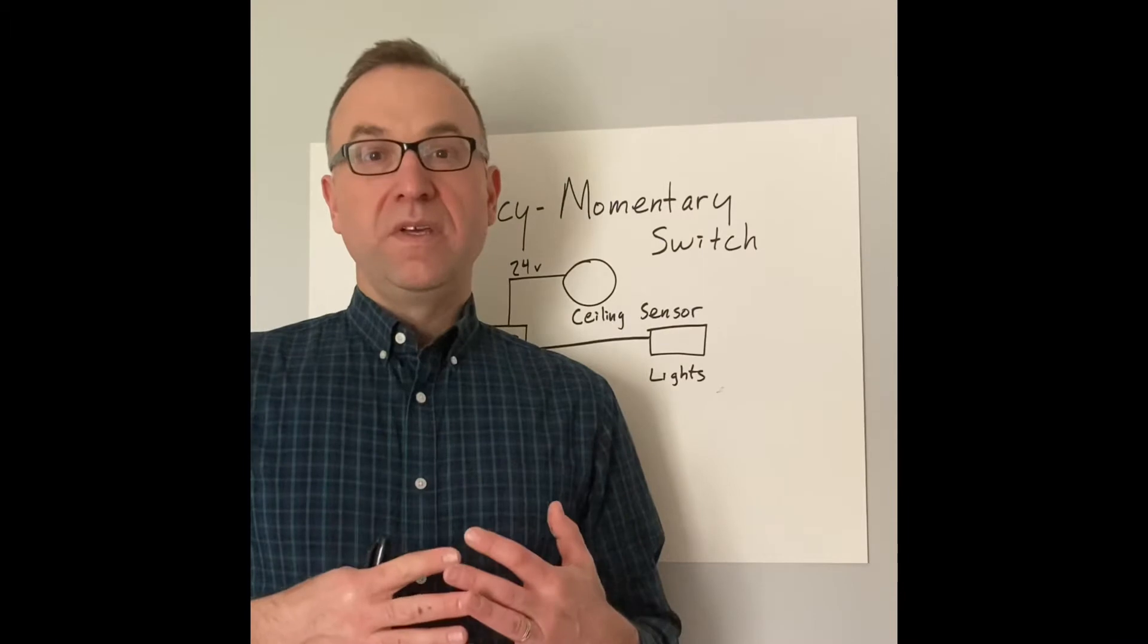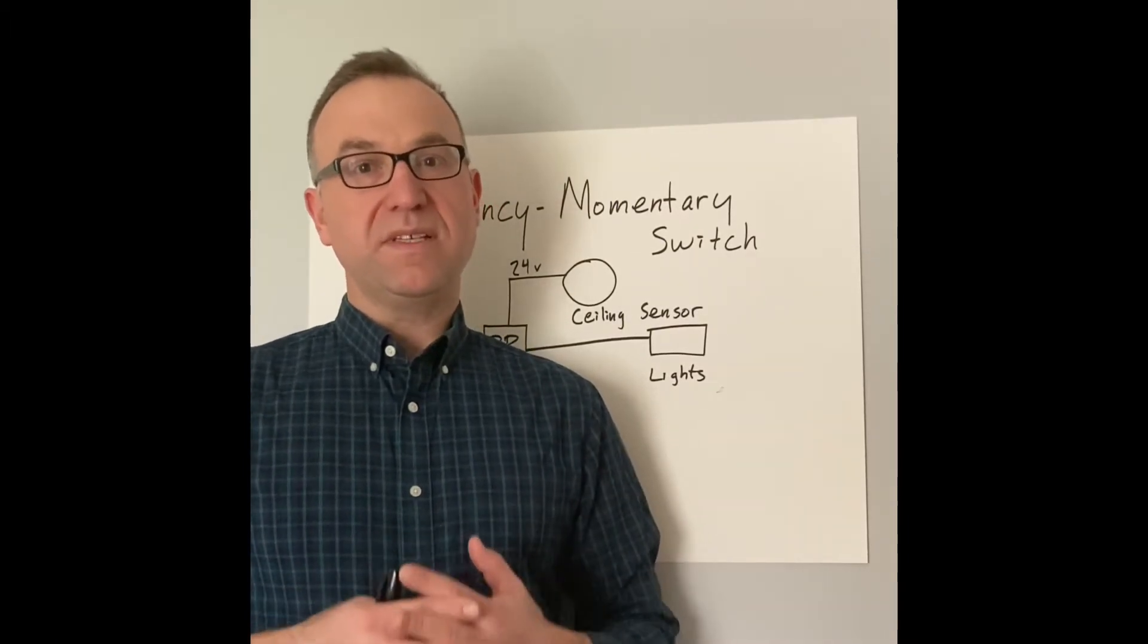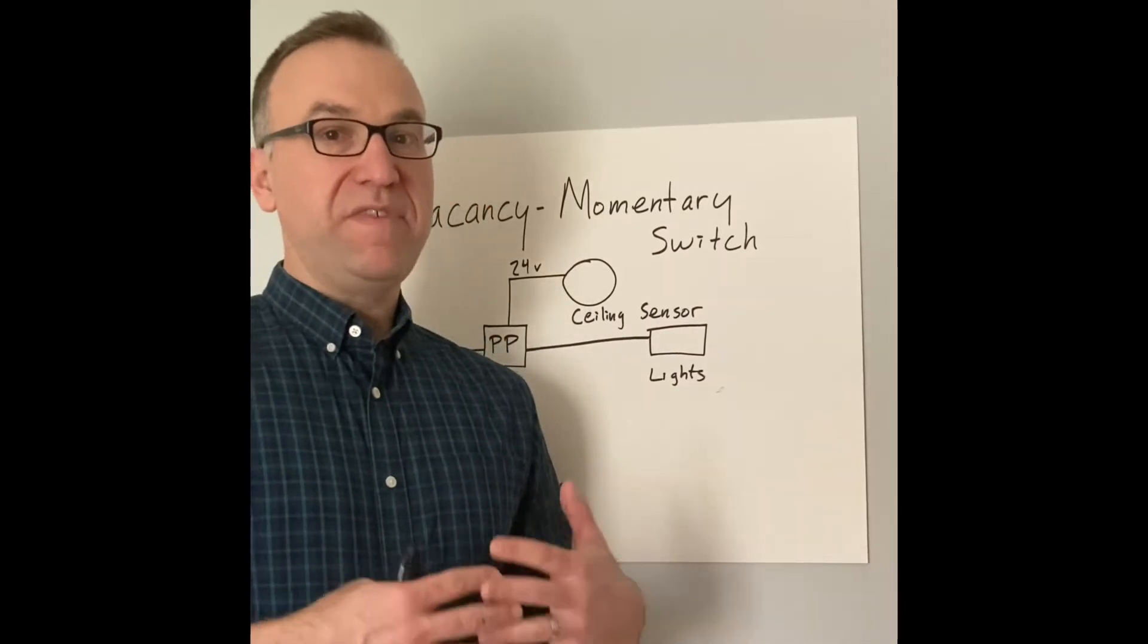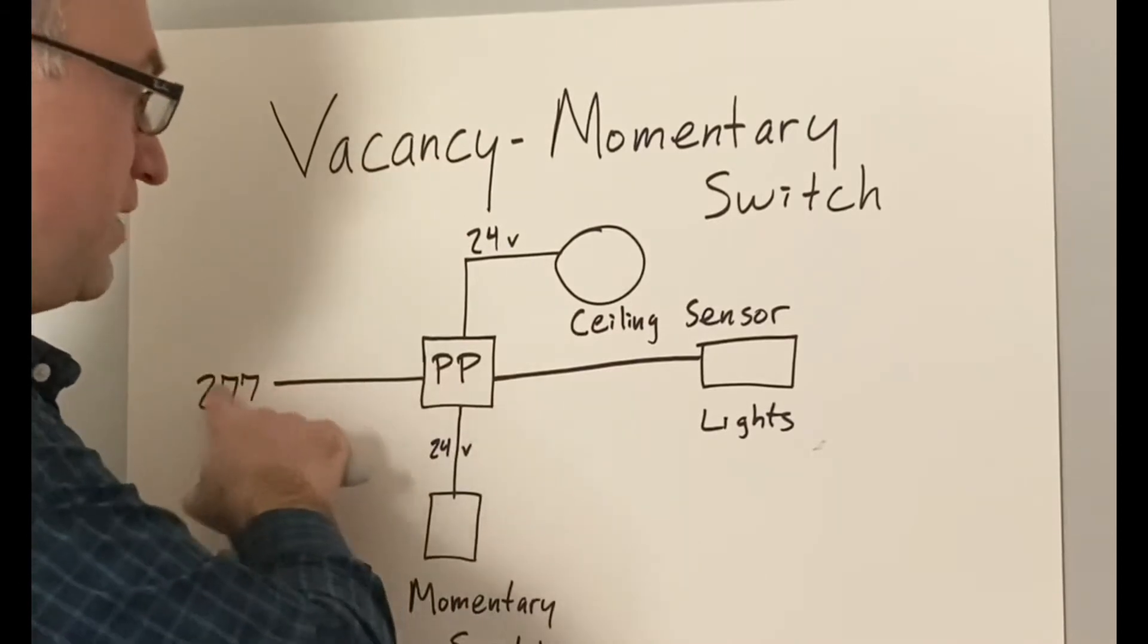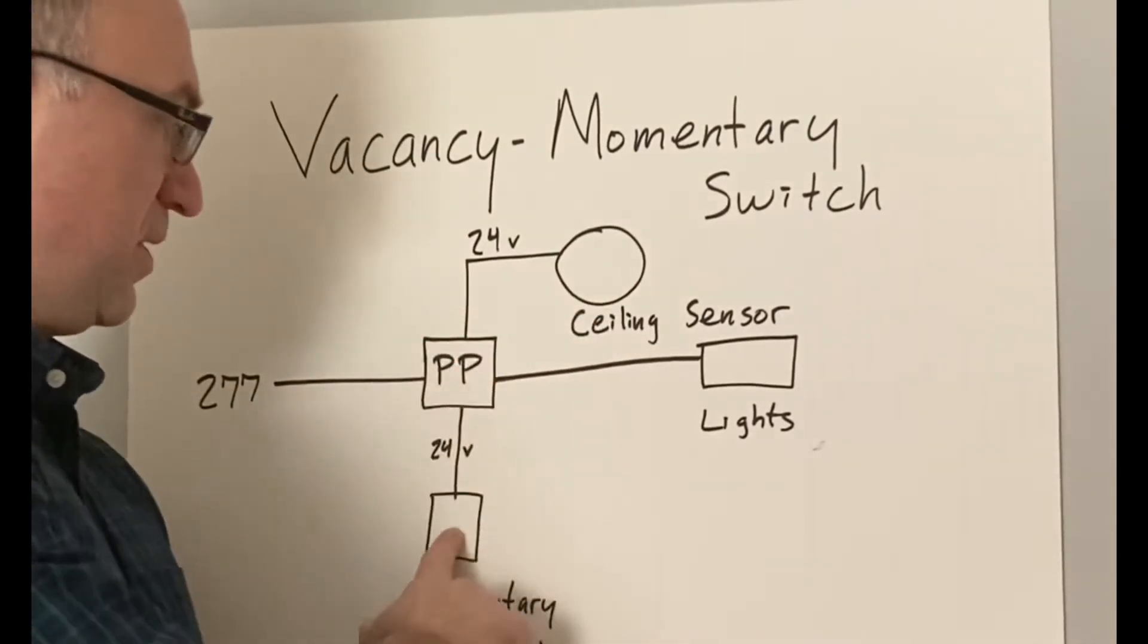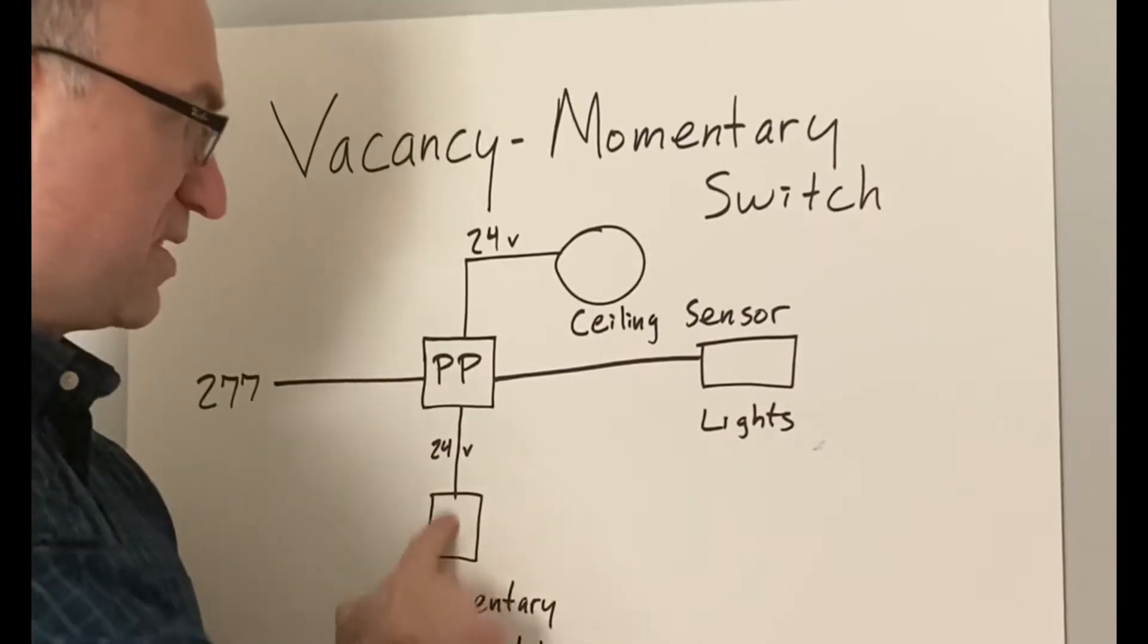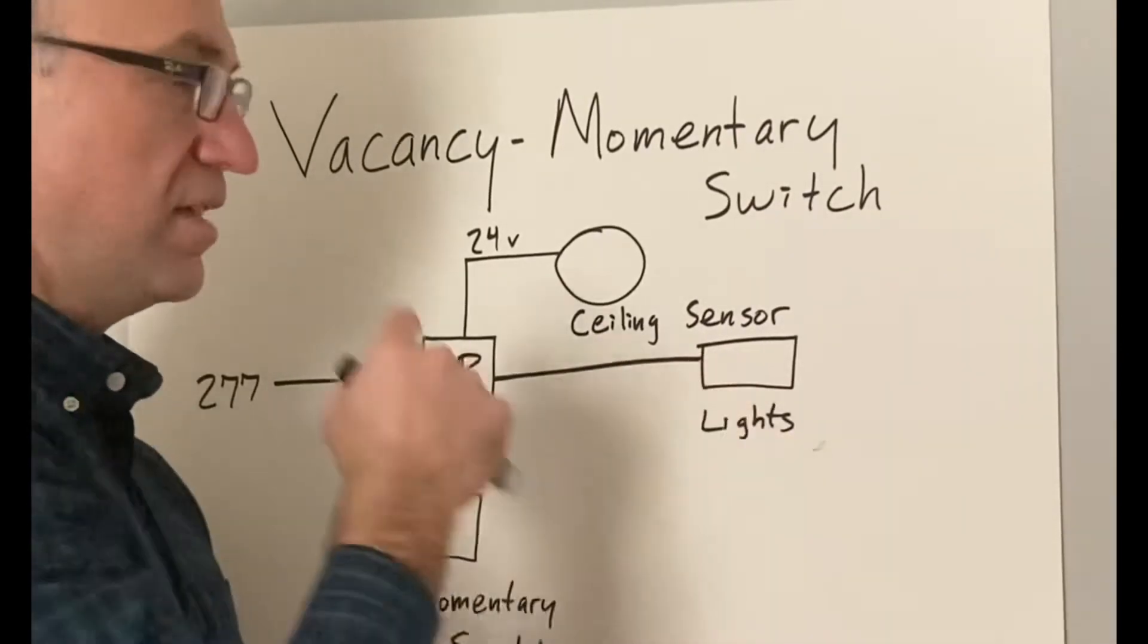Okay, so if our room is larger than 15 feet by 15 feet, we're going to need to do a ceiling sensor. And this is the way that we can accomplish that vacancy setting with a momentary switch. So we have line voltage into our power pack. Again, we have our motion sensor, but for the lights to come on, we just have a simple momentary switch here. You hit the momentary switch, lights go on.